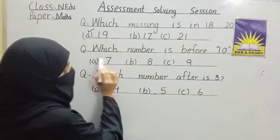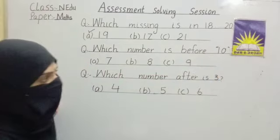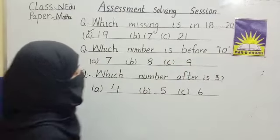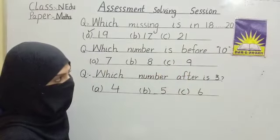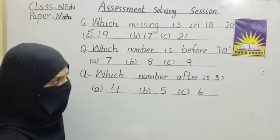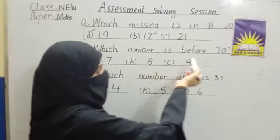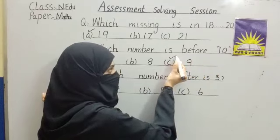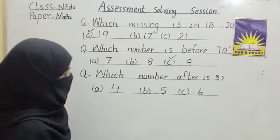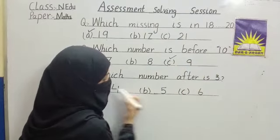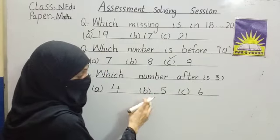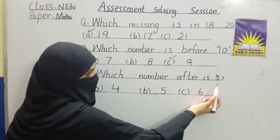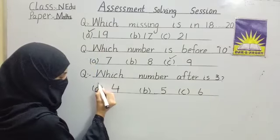Next question: which number comes before 10? Option A: 7. Option B: 8. Option C: 9. Which number comes after 3? Option A: 4. Option B: 5. Option C: 6. After 3 comes 4 — very good. Tick option A — four.